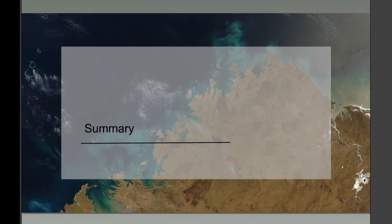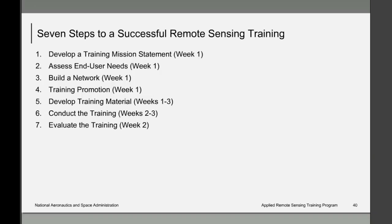There are seven steps to a successful remote sensing training. Today we talked about steps five, six, and seven — how to develop, conduct, and evaluate your training. Specific topics covered were the differences, advantages, and disadvantages of online versus on-site or face-to-face training, the details of on-site training structure, how to develop case studies and hands-on exercises, the timeline, and how to conduct program evaluation.